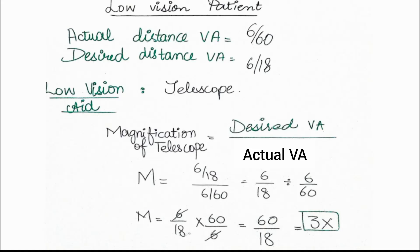These magnifications may differ for every patient according to their actual and desired real acuity. The formula is: magnification = desired real acuity ÷ actual real acuity. That's all for today's lecture. For any enquiry, comment in the comment section, and watch the handheld telescope training steps video linked in the description. Don't forget to like, subscribe, and share with your fellows — thank you!